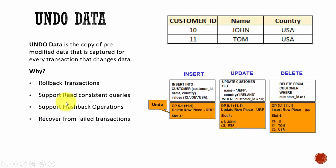Undo data is also used to support flashback operations. When we say flashback operations, suppose you want to know how the data looked as of yesterday — a lot of data will have changed, but somehow you want to see the data as it was yesterday. You can do that only if you have enough Undo data maintained. To perform such flashback operations, you need Undo data.